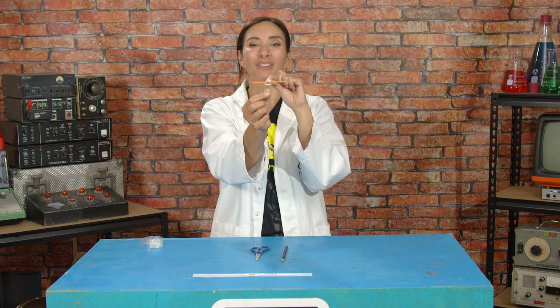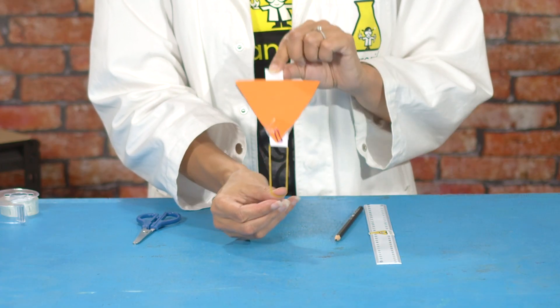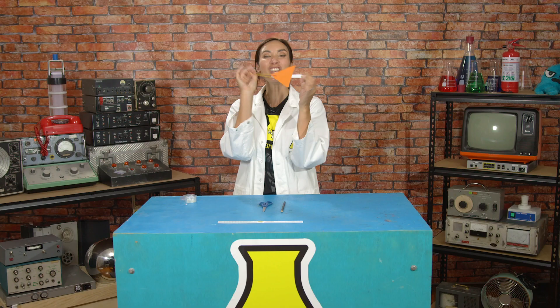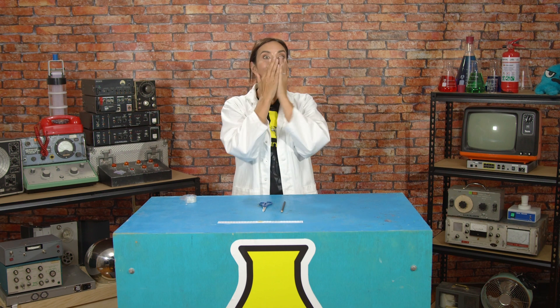Hook your thumb into the elastic band and pull the plane backwards by the other end of the catapult. When we stretch the elastic band backwards we create tension, and when we let go the elastic force will create enough thrust to launch the plane forwards. Okay, ready? Yep, that definitely flies!